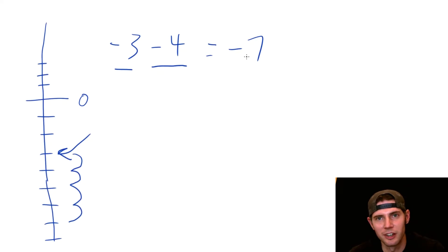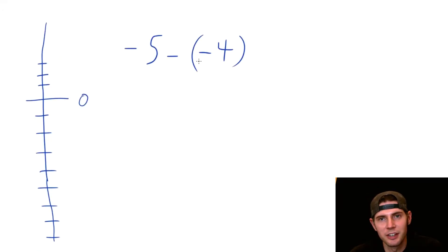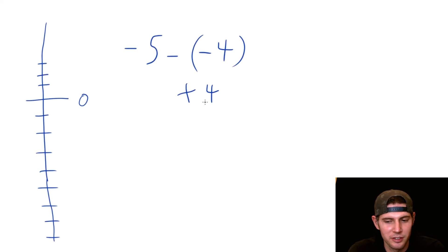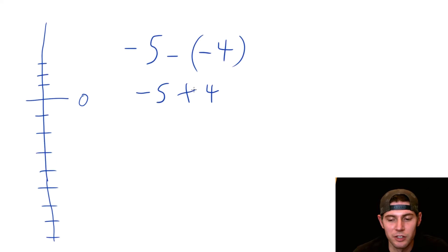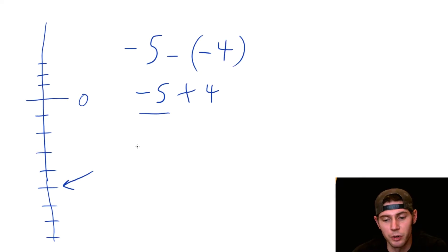So the answer for that one is negative seven. The next one is negative five minus negative four. Whenever you're subtracting a negative, that's the same thing as adding. One way to think of it: I'm not not going to the store, so you are going to the store. So it becomes a plus. Negative five plus four — we start at negative five and go up four: one, two, three, four. That brings us to negative one.